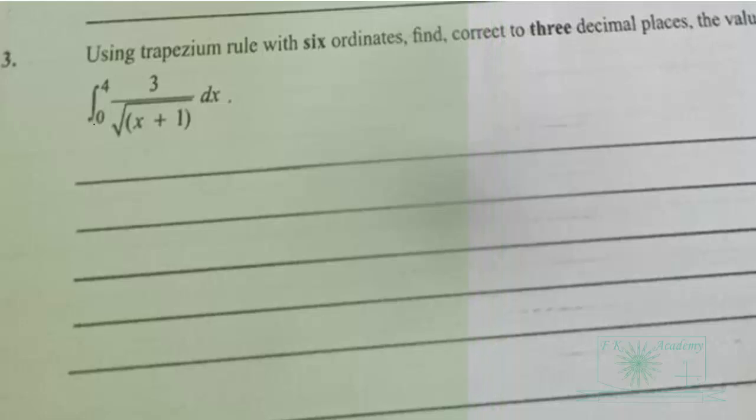Find, correct to three decimal places, the value of the integral from 0 to 4 of 3 over square root of (x+1) dx.